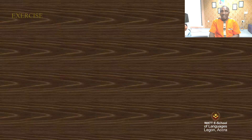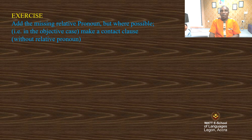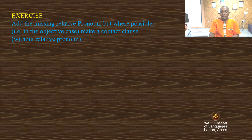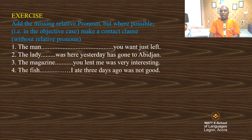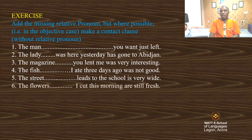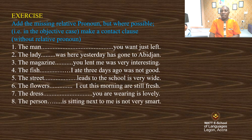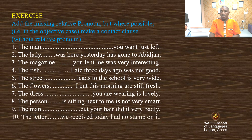Let's have a look at the activity that follows: add the missing relative pronouns where possible. In objective case, make a contact clause with a relative pronoun. The man you want just left. The lady was here yesterday has gone to Abidjan. The magazine you lent me was very interesting. The fish I ate three days ago was not good. The street leads to the school is very white. The flowers I cut this morning are still fresh. The dress you are wearing is lovely. The person is sitting here next to me is not very smart. The man cut your hair did it very badly. The letter we received today had no stamp on it.